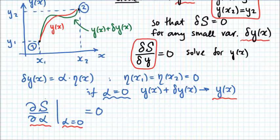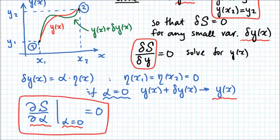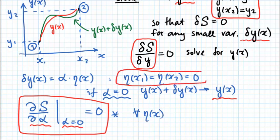This condition is equivalent to the requirement of the functional derivative being equal to 0. The caveat is that if we solve this equation, it must be true for any eta of x, as long as eta of x satisfies the boundary conditions we are imposing. This is a step forward because we now know how to evaluate partial derivatives.